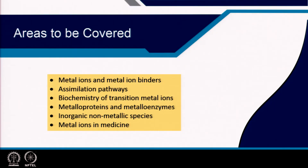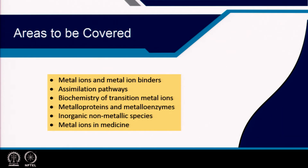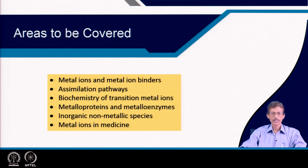For the entire course, we will be focusing our attention on metal ions and metal ion binders. We know the typical example of iron in our blood system. Similarly, for bacteria, they can take up metal ions like iron using siderophores. So not only the metal ion, but also the ligating parts which we are calling the binders.